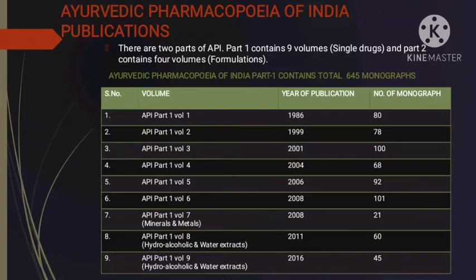The Ayurvedic Pharmacopoeia of India has two parts. Part 1 has 9 volumes dealing with single drug monographs, totalling 645 monographs. Part 1 Volume 1 was published in 1986 with 80 monographs; Volume 2 in 1999 with 78; Volume 3 in 2001 with 100; Volume 4 in 2004 with 68; Volume 5 in 2006 with 92; and Volume 6 in 2008 with 101 monographs.